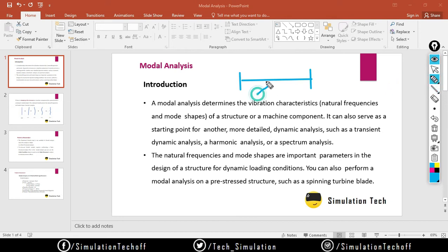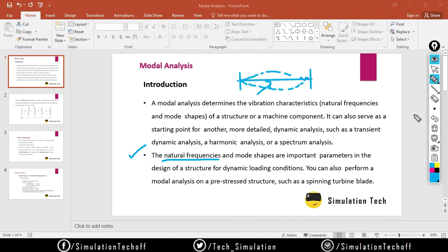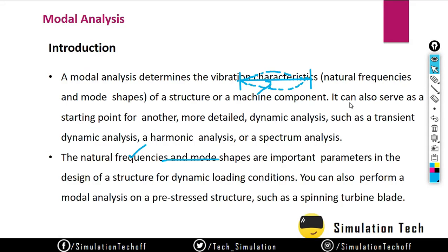Due to the applied wind force, the bridge moved in a particular shape — that is the mode shape. When the force was applied, the excited frequency exactly matched the natural frequency of the bridge, which is why it broke. Resonance occurred on this bridge. You should always ensure that the applied force frequency cannot match any natural frequency when designing a component — that is why natural frequency and mode shapes are very important factors in structural design under dynamic loading.